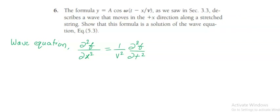The formula is y equals A cos of omega times (t minus x by v). First, let us find the second partial derivative of the given formula with respect to the coordinate x.